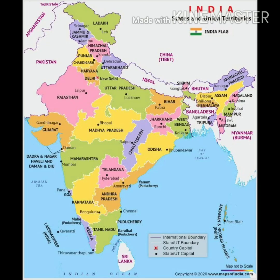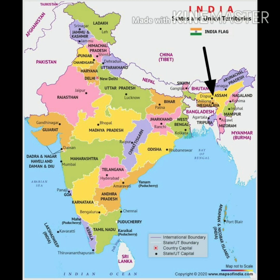Now let us have a look at the states that lie in the northern plains. First is Punjab, next we have Haryana, third is Delhi, next is UP, then Bihar, West Bengal, Assam, Jharkhand, and last is Tripura.